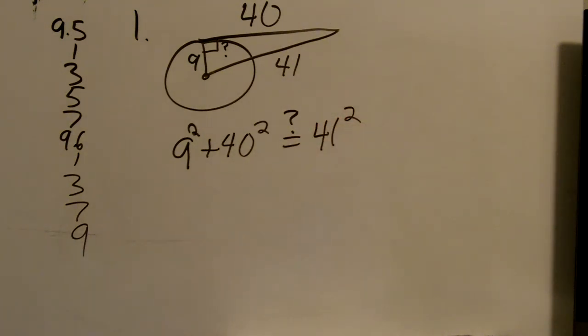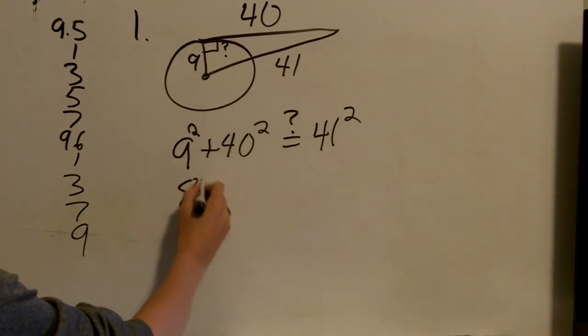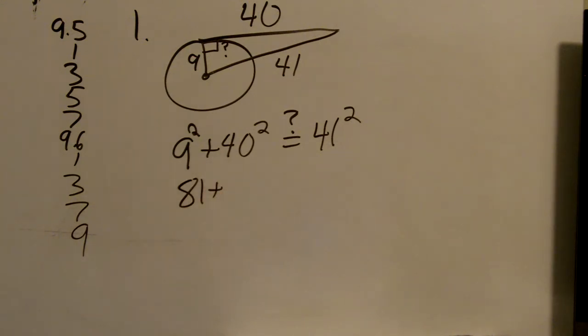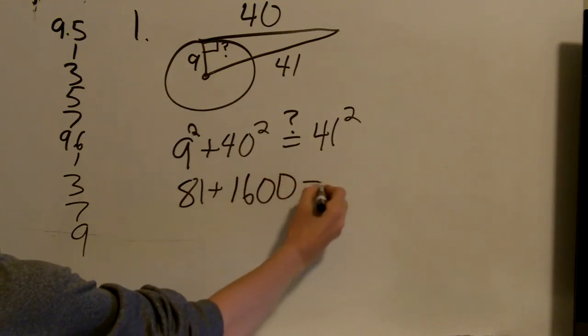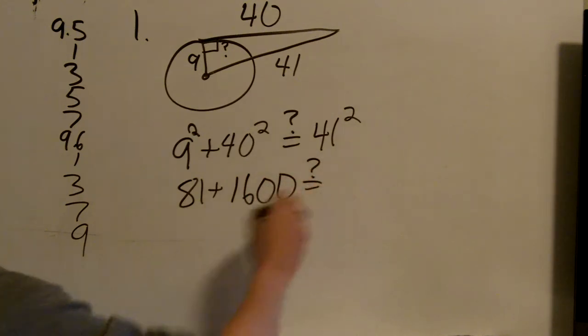So I'm going to take and put in my calculator 9 squared, which gives me 81, plus 40 squared, which gives me 1,600.